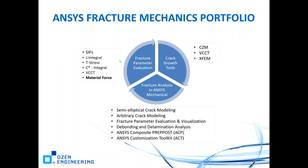These are fracture parameter evaluations — once we find the stress intensity factor, we compare it to critical stress intensity factors (a material property) and determine if the crack will propagate. On the upper right-hand corner, we have crack growth tools: CZM method, VCCT method, and XFEM method. Then there is fracture analysis enhanced mechanical: semi-elliptical crack modeling, arbitrary crack modeling, fracture parameter evaluation and visualization, debonding and delamination — both addressable in ANSYS.